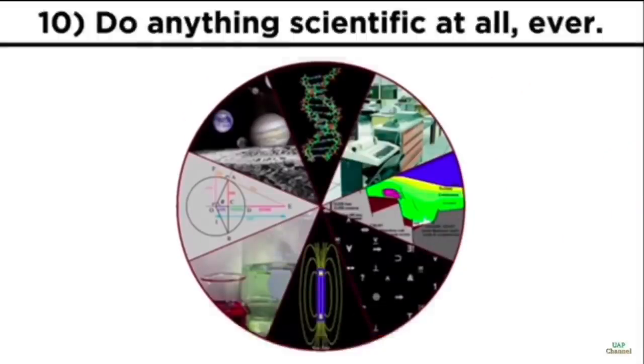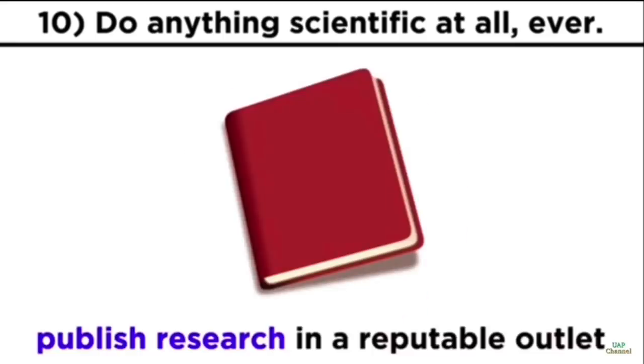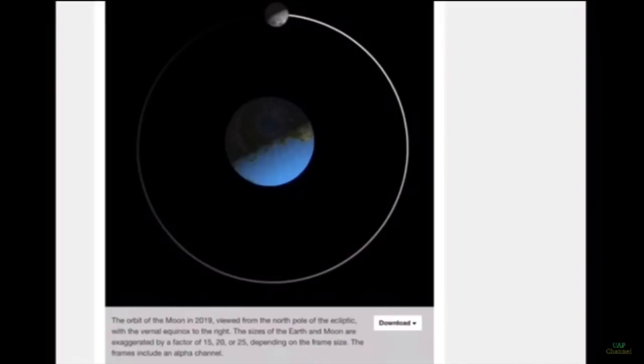Do anything legitimately scientific at all. Publish anything whatsoever about your model in anything reputable anywhere. So now you're talking about peer review. So you want us to do something that gets accepted by the same people who are tampering with and molesting the algorithm of the search engines, for example.